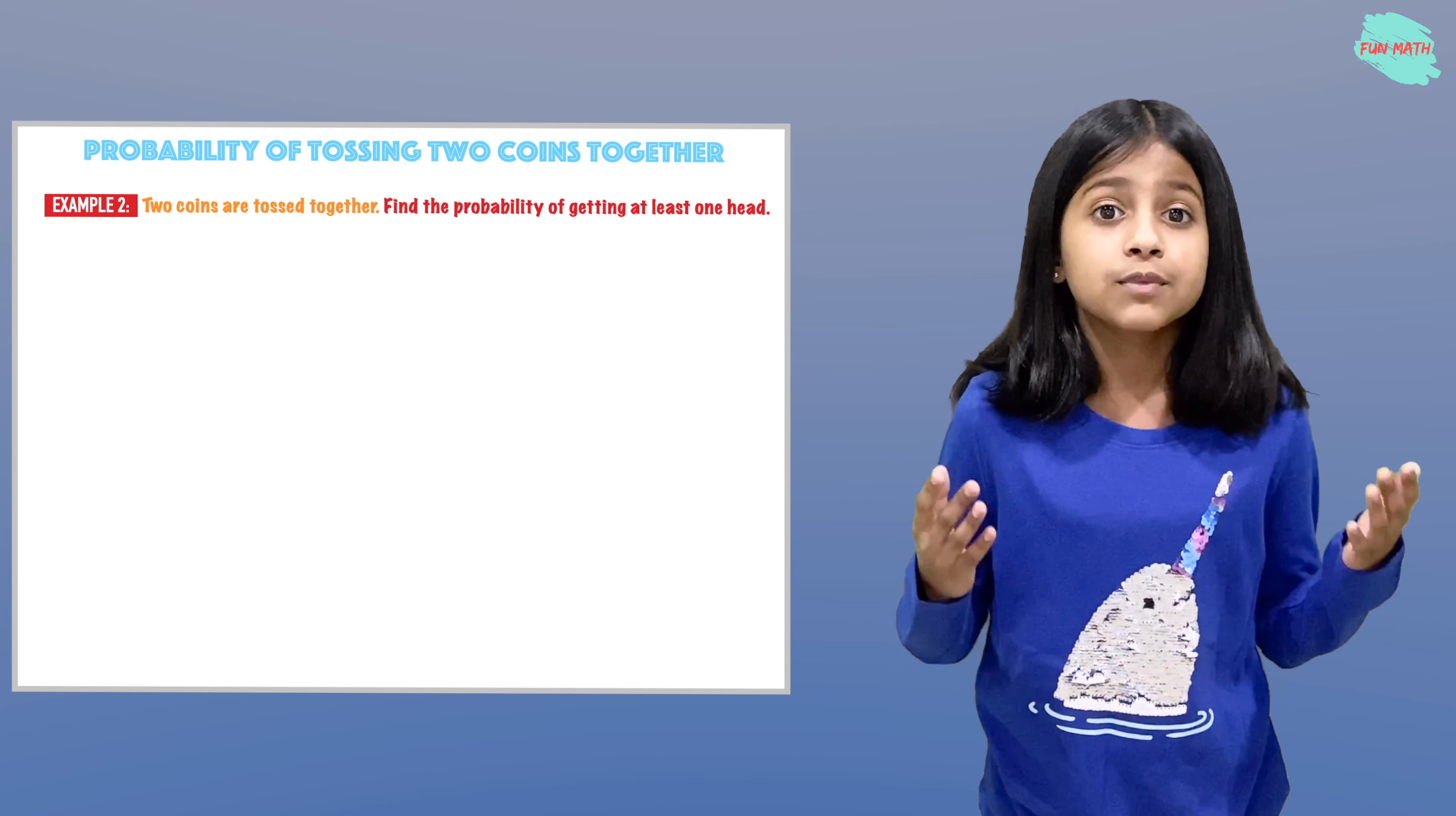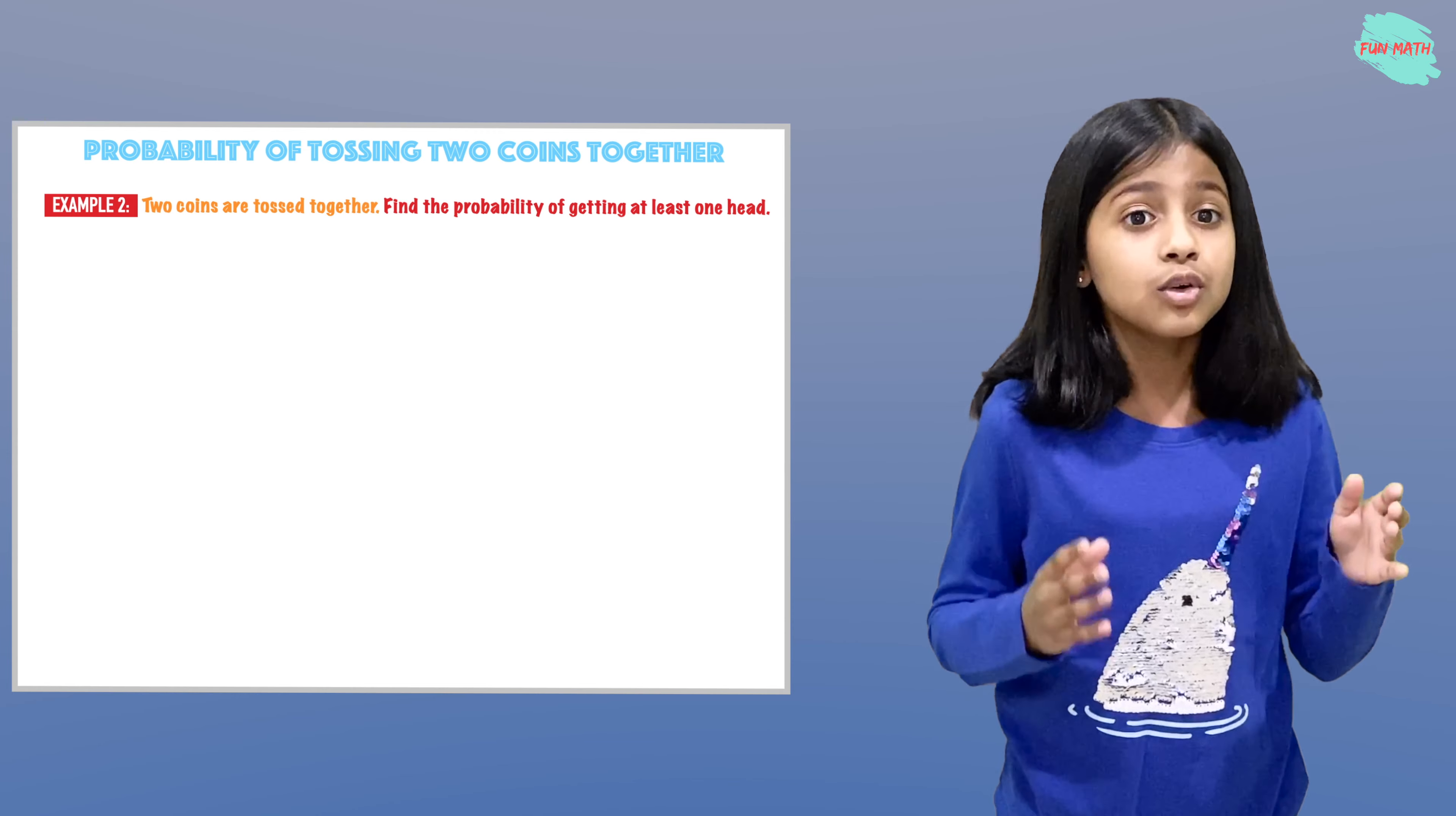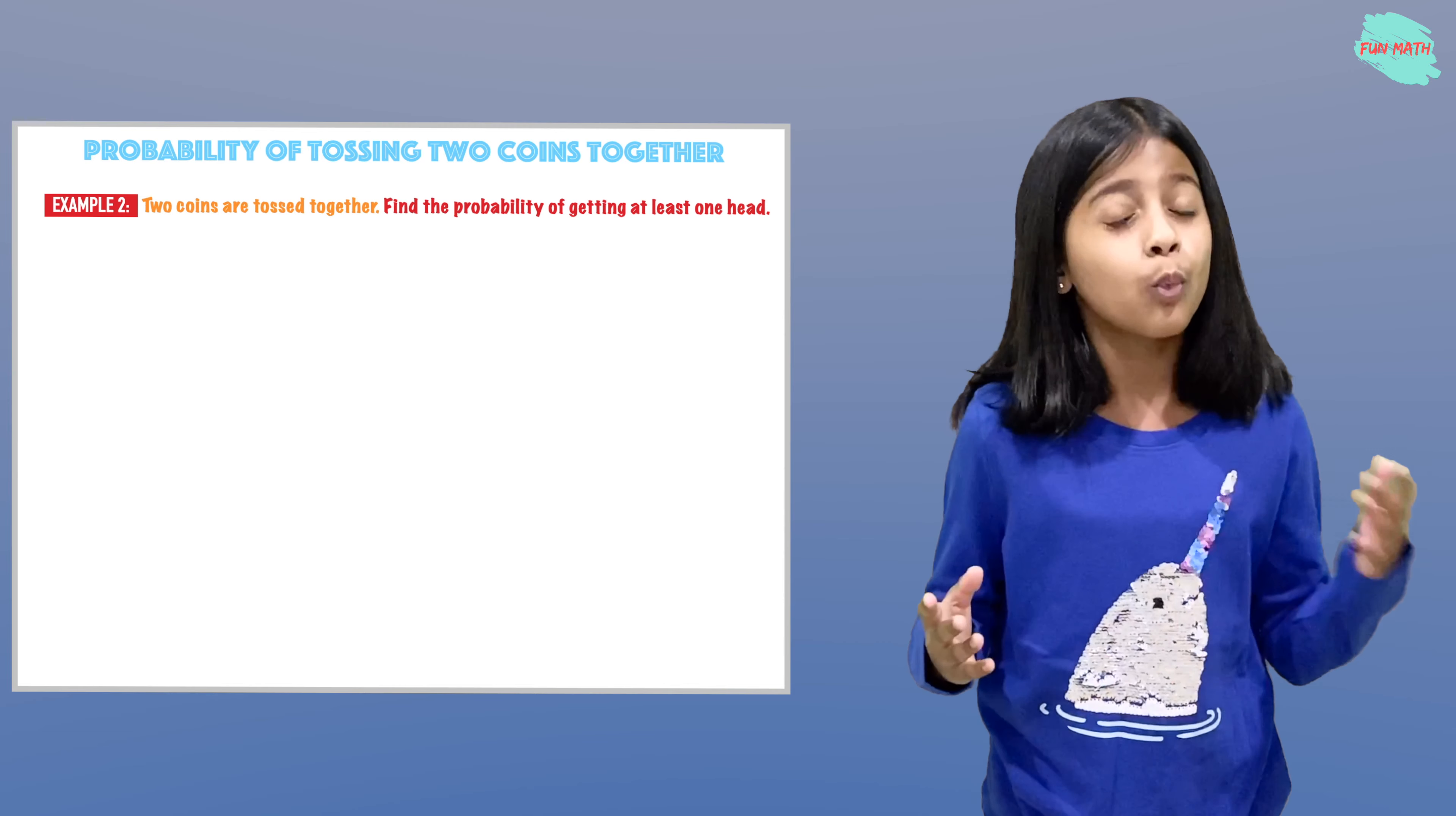So the problem we will be talking about is tossing two coins that are tossed together, and we are finding the probability of getting at least one head.